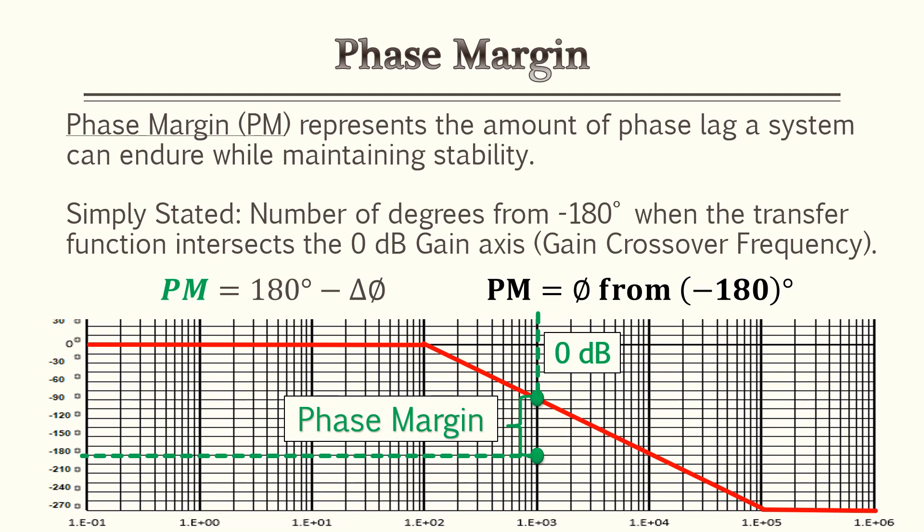In the picture shown, we start at negative 180 degrees with the green line and count up until we find where our magnitude intersects zero decibels. From there we're able to find our phase margin, and we'll go over this in a practice problem so you get an idea of how to find it.